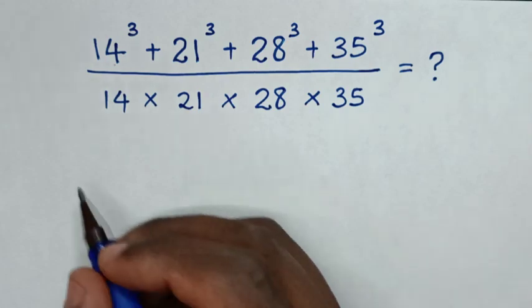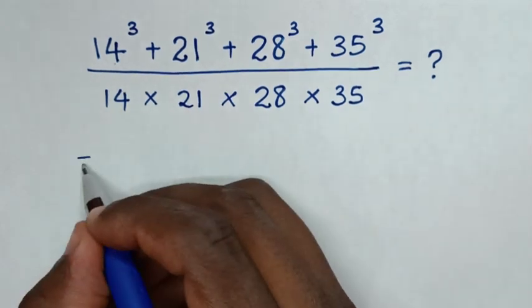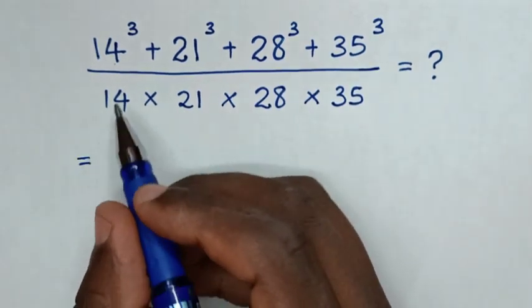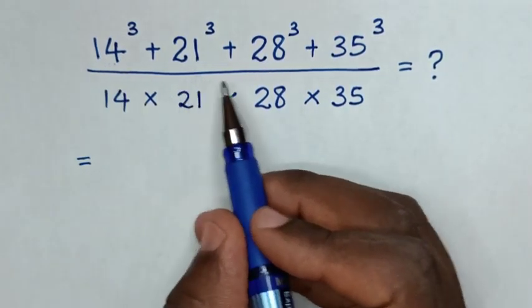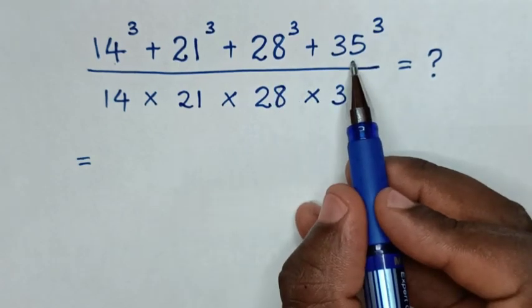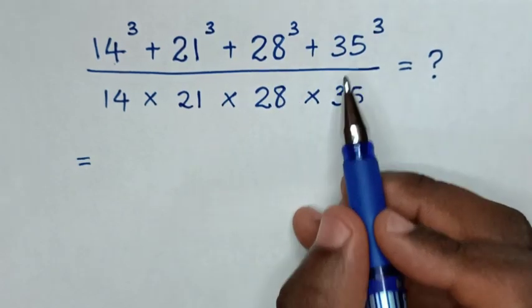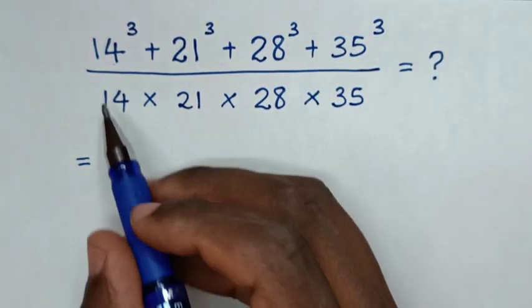So this will be equal to — the bases 14, 21, 28, and 35 are all multiples of 7.